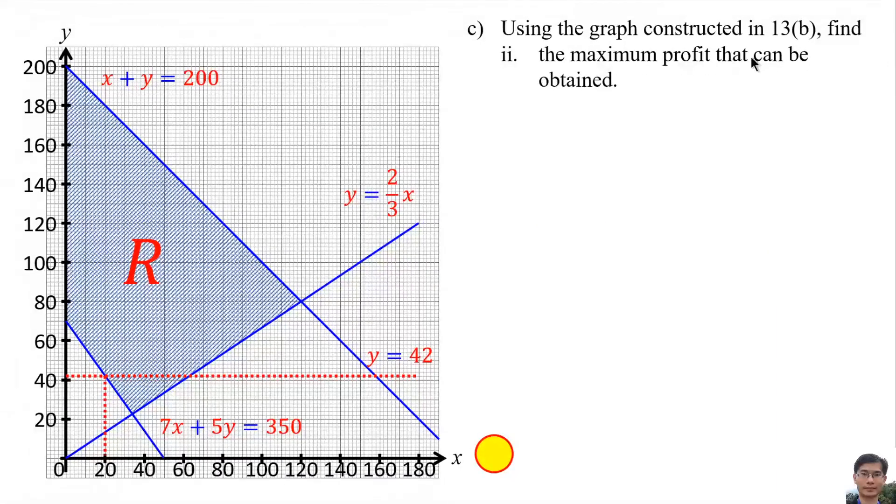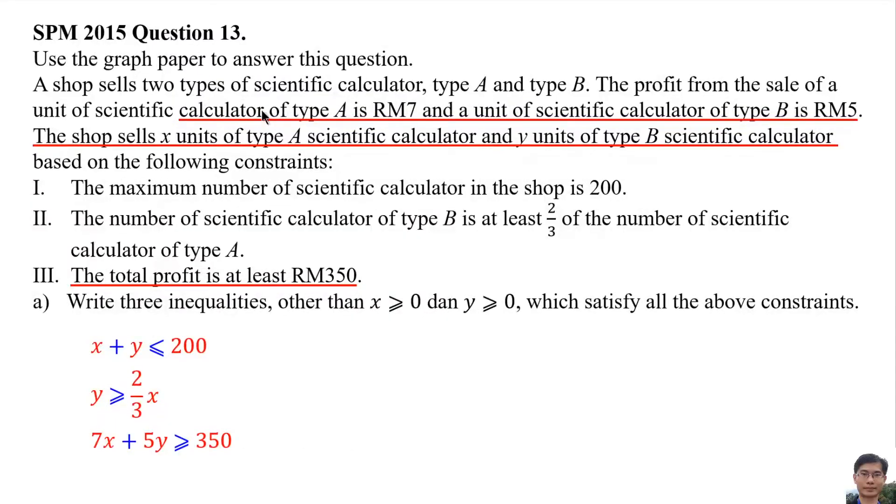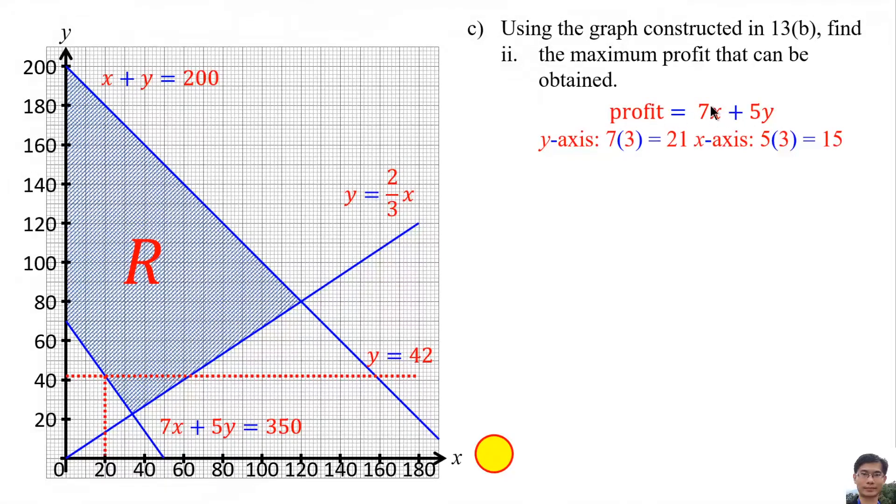The maximum profit that can be obtained means the profit equals 7x plus 5y. According to the questions, calculator of Type A is RM7 and calculator of Type B is RM5. Then we need to draw this equation on the graph. Normally we plot 7 on y-axis and 5 on x-axis. But 7 and 5 is too small, so I multiply both of them with 3. So 21 and 15.